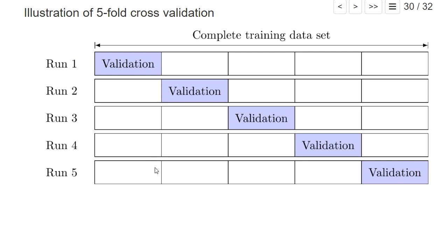For each of the five runs, we get a root mean squared error for each value of our hyperparameters. We can then take the average of the root mean squared errors over these five runs as an assessment for each hyperparameter combination, and pick the combination that has the lowest average root mean squared error across all five runs.